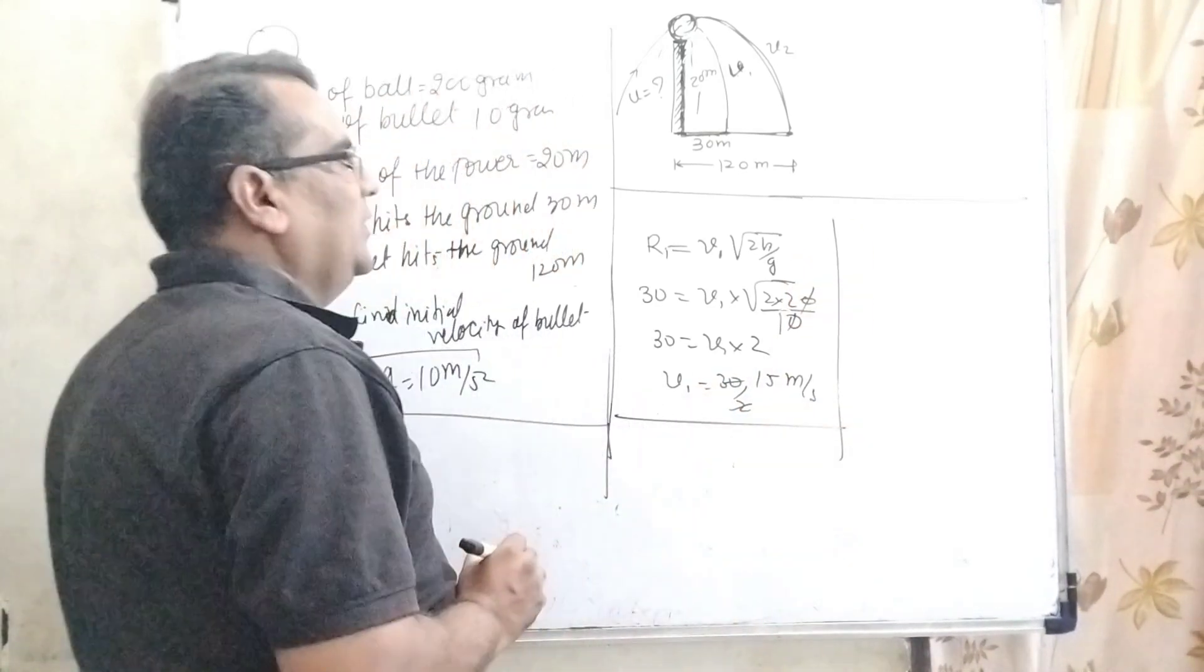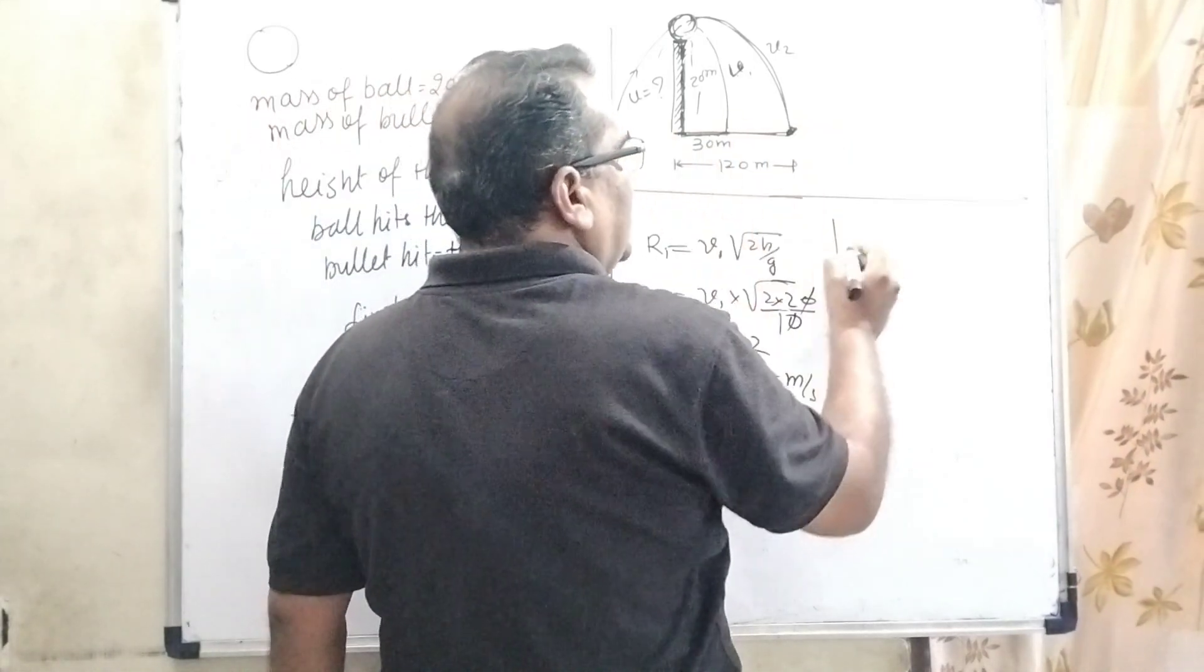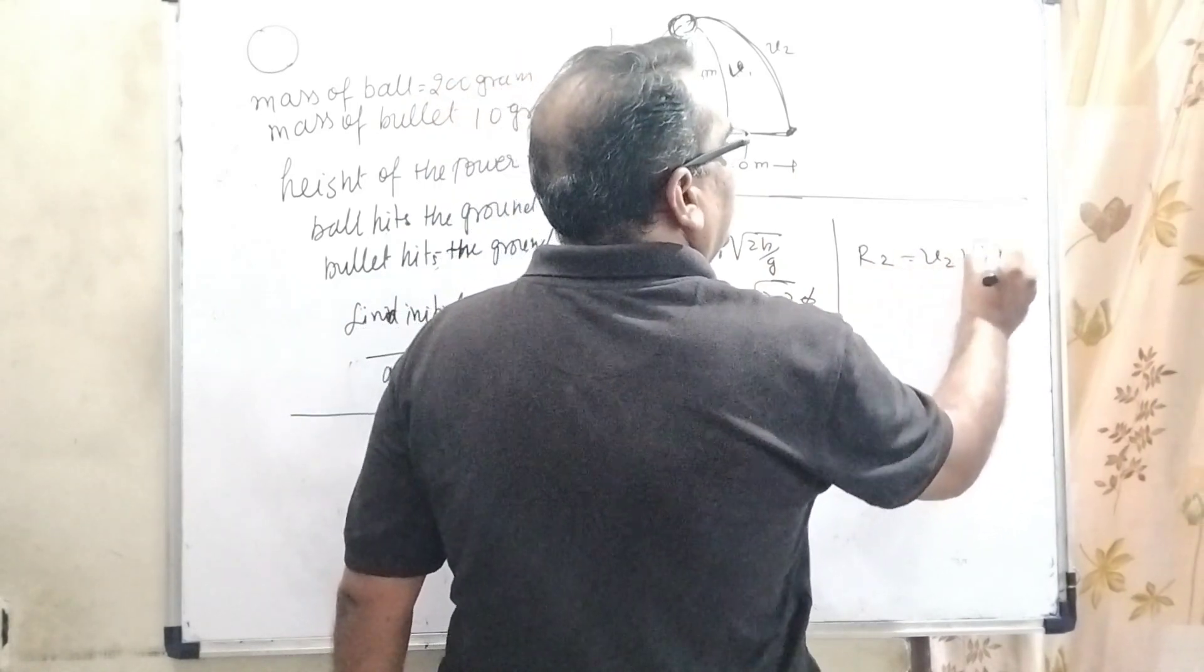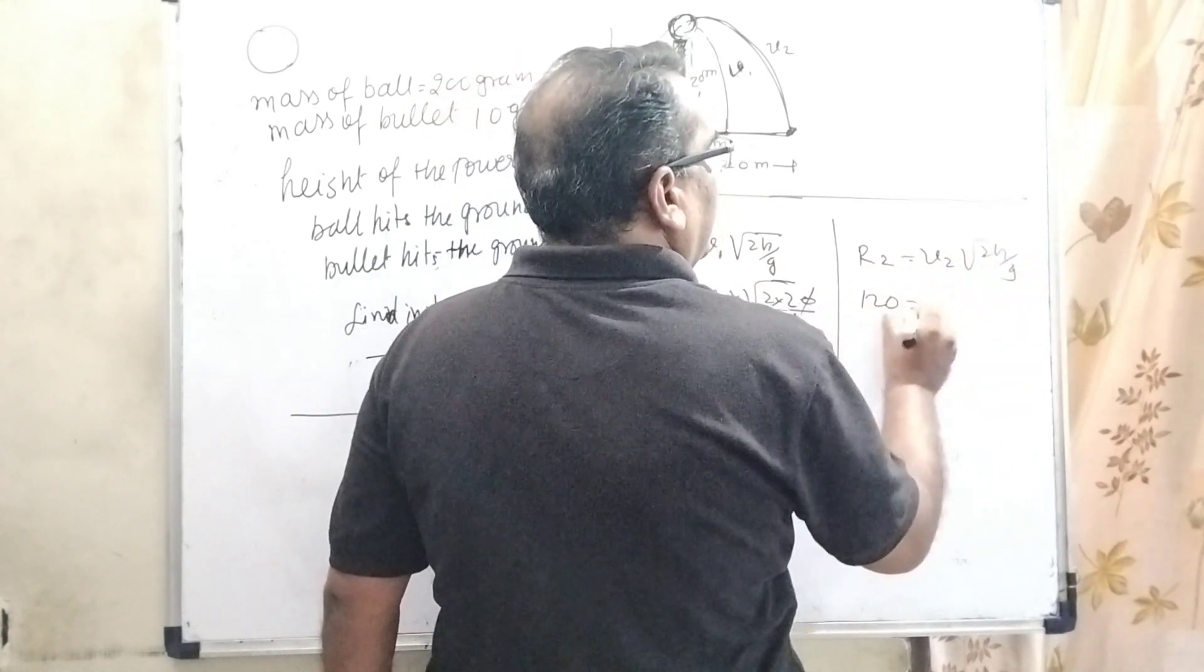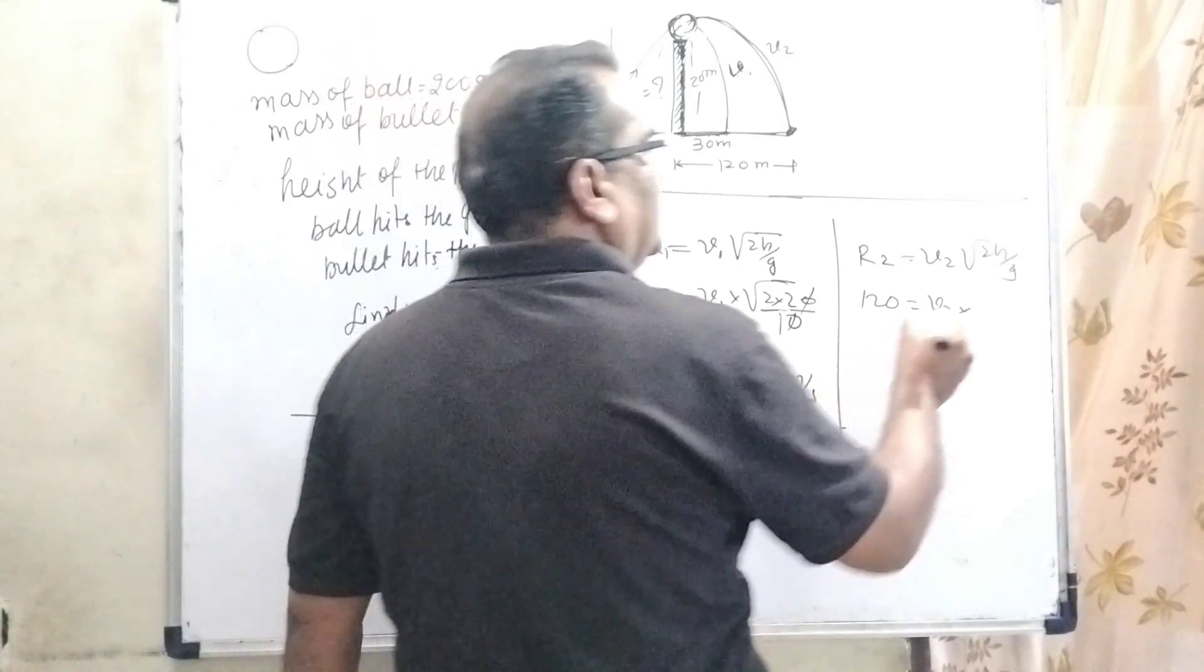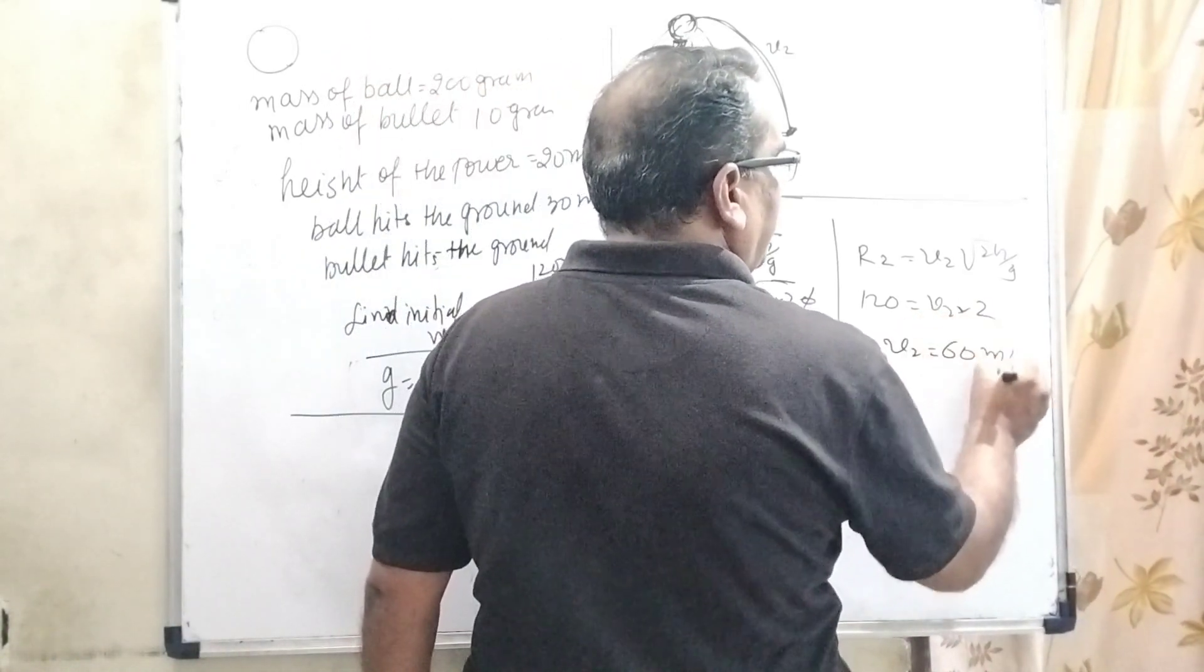And similarly, we have to find out the final velocity of this bullet. Range is given, R2, that is 120. V2 times square root of 2H by G. And time of flight we have already found out is 2 seconds. So V2 is equal to 60 meter per second.